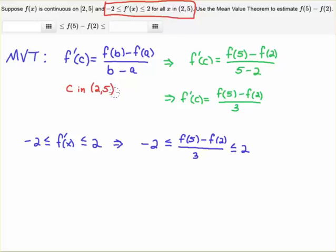For that c that exists in (2,5), if f'(x) is between -2 and 2, then certainly f'(c) is between -2 and 2. Since f'(c) equals this quantity, we substitute it into the inequality. Now it's just a little algebra.